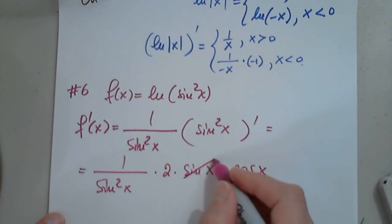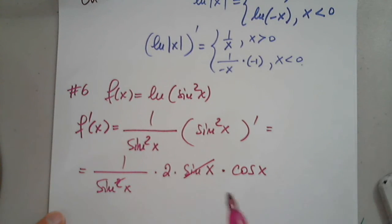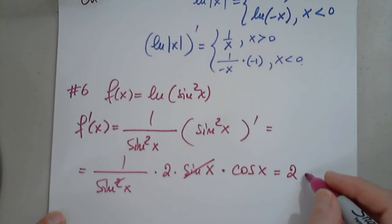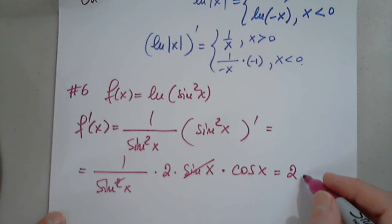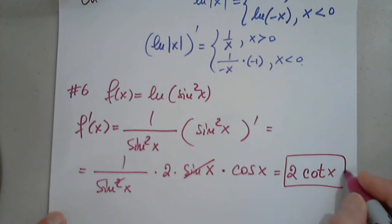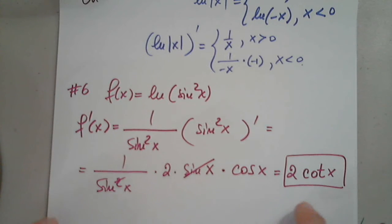So obviously I can simplify a sine. How much is cosine over sine? What function is cosine over sine? It's not tangent — sine over cosine is tangent. Cosine over sine is cotangent.